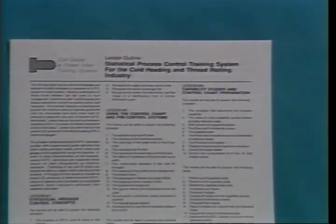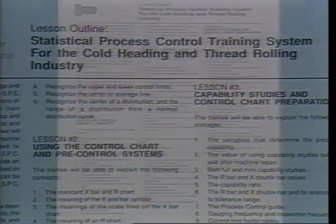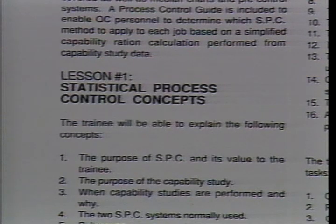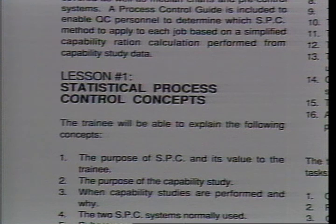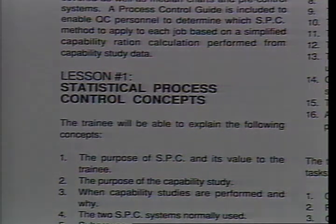There are three lessons in this training system. Lesson 1, Statistical Process Control Concepts, explains why it is to the operator's advantage to apply SPC techniques. The goal is to assure the operator that the implementation of SPC will make his job easier. The portion that follows explains why measuring a subgroup is necessary when evaluating the current condition of the process.